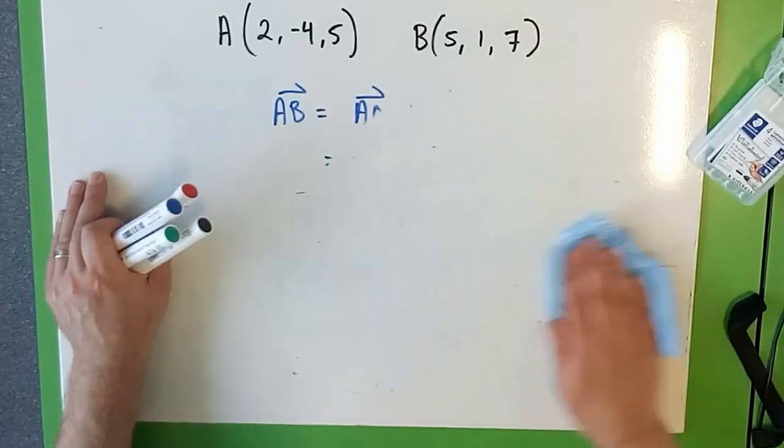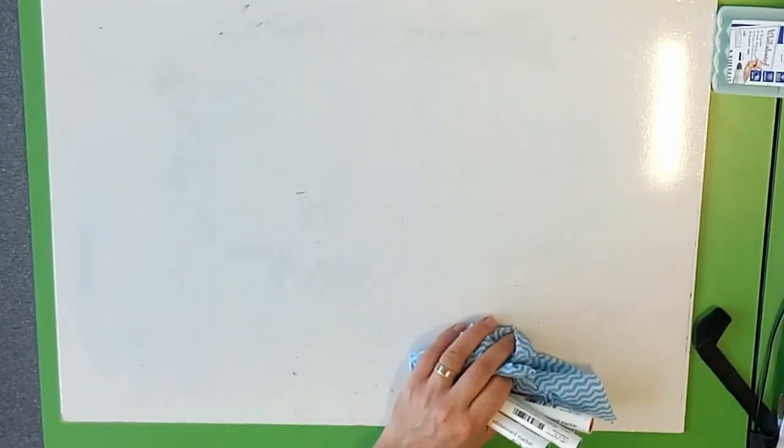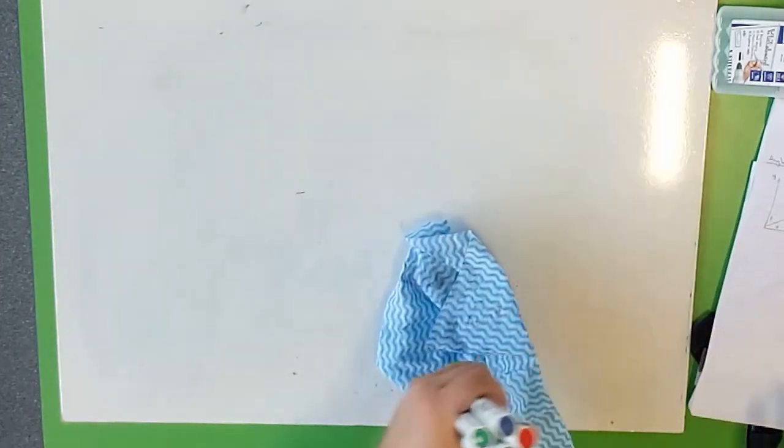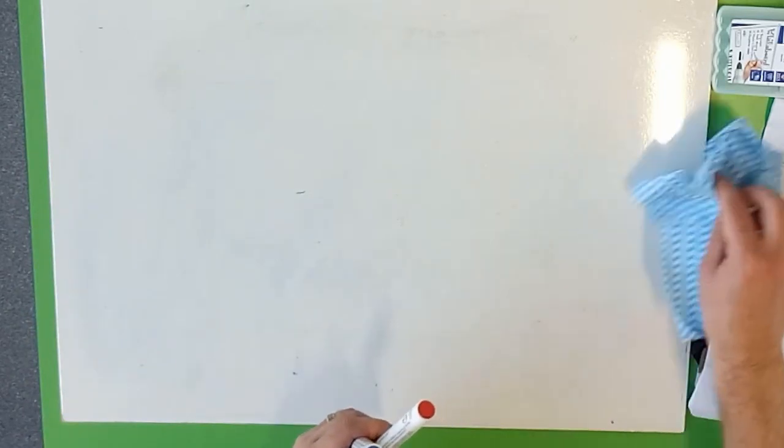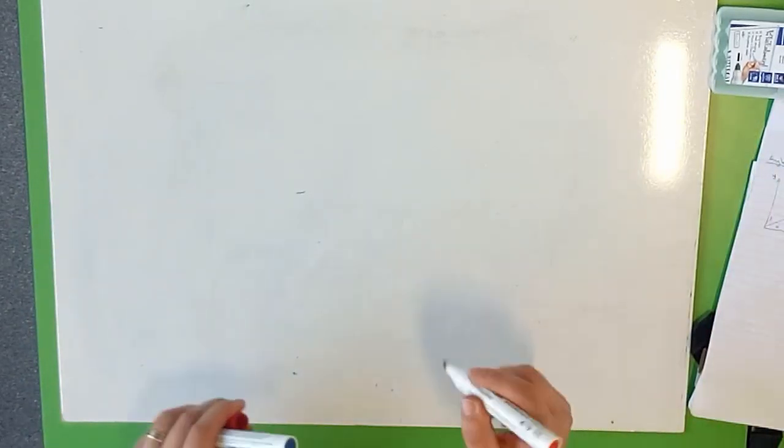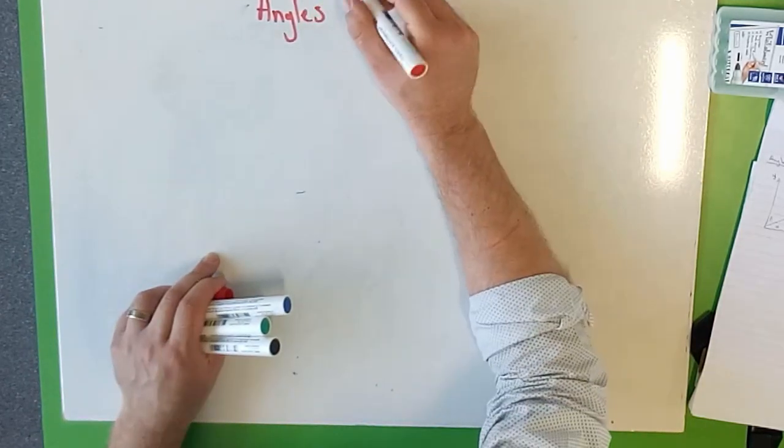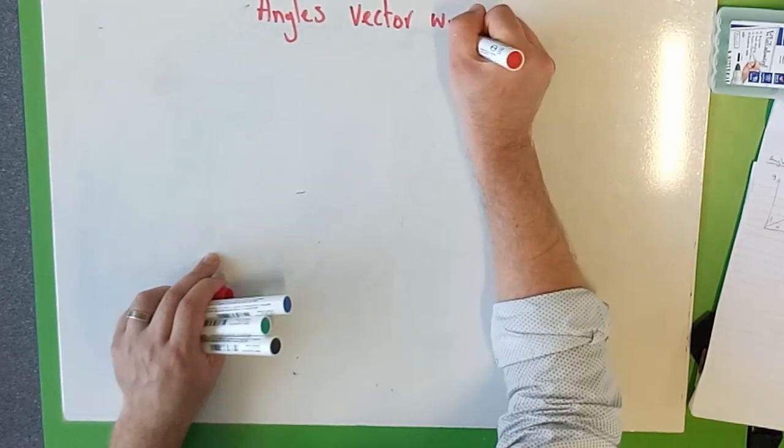All right, we're getting somewhere now, going really well. What's the next thing? Just one more little thing to talk about before we move on, and that is the angles that a vector makes with the axes.